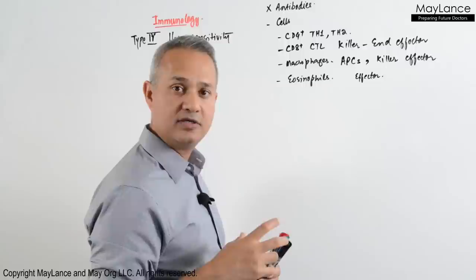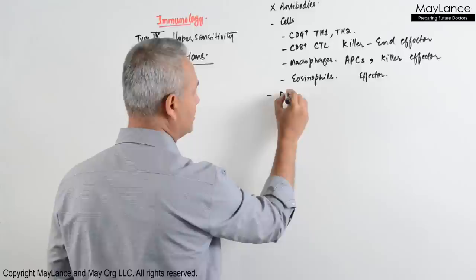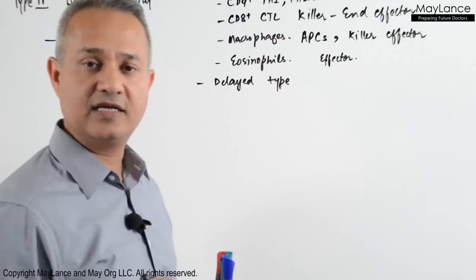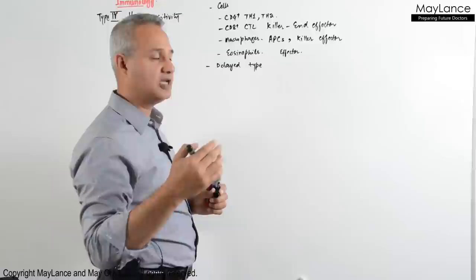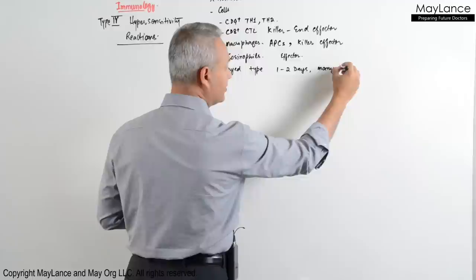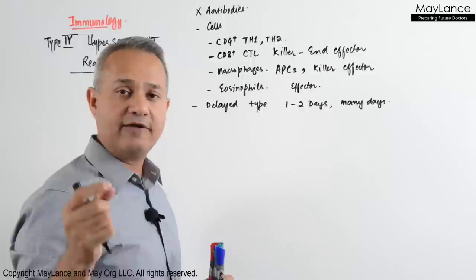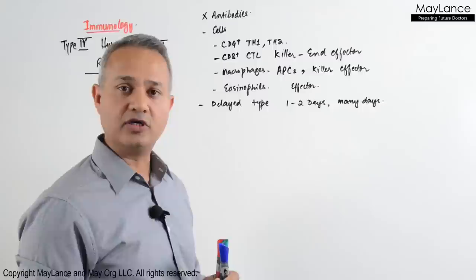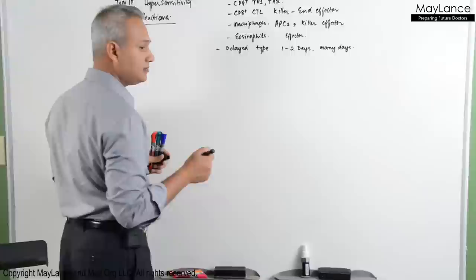This is also called delayed type hypersensitivity. The reason is that this type of reaction needs one to two days to develop, and it is usually resolved over many days provided the triggering substance or agent is removed. If the antigen is not removed, the reaction would continue.